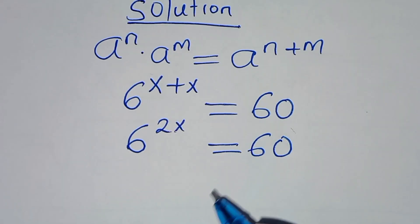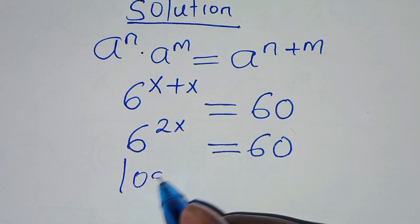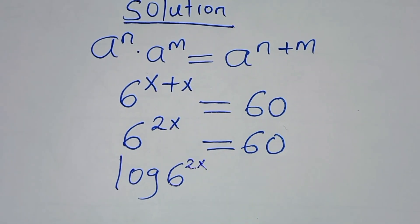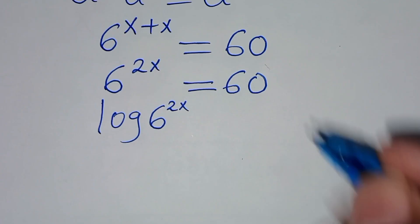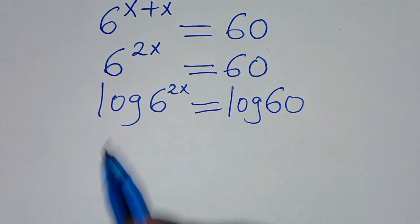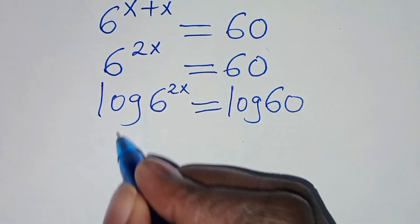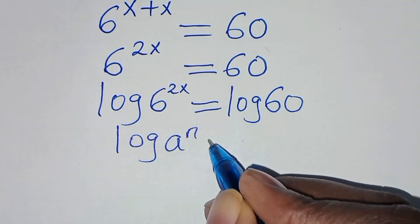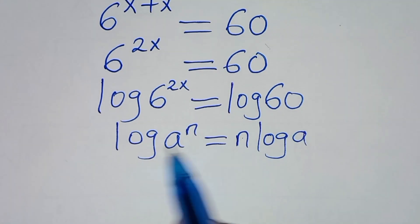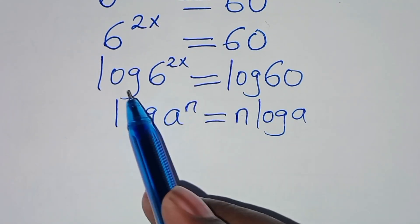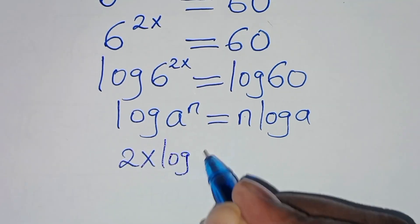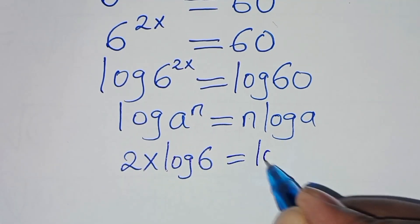So to solve for x here, we introduce logarithm on both sides. We have log of 6 to the power 2x equals log 60. Now log 6 to the power 2x is in the form of log a to the power n, which you can express as n·log a. Applying this power rule property, log 6 to the power 2x becomes 2x·log 6, and this is equal to log 60.